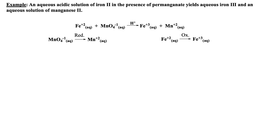A slightly easier approach to balancing this redox reaction for the student is as follows. After the half-reactions were written, the student can simply grow the equation as shown, which cuts down on all of the rewriting of each step. Again, the element being reduced, manganese, is balanced.